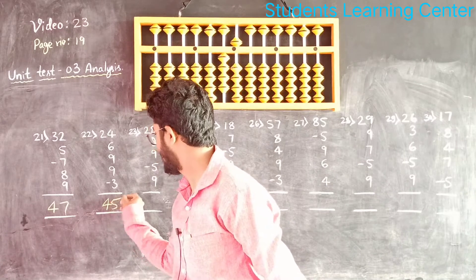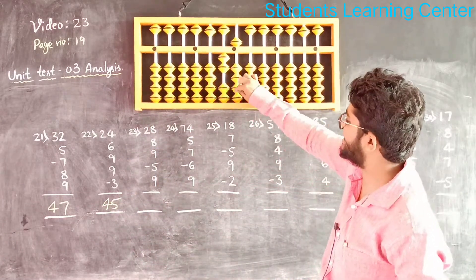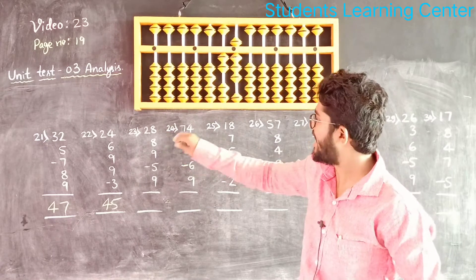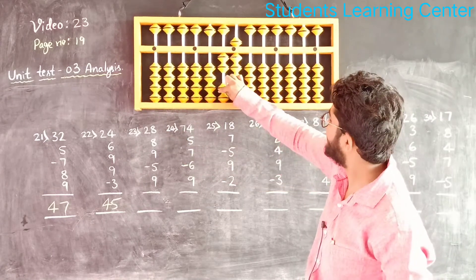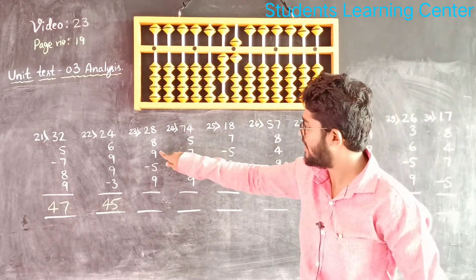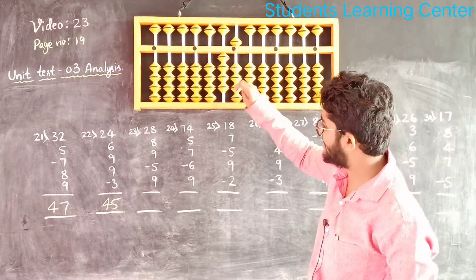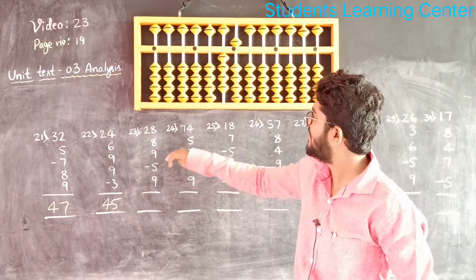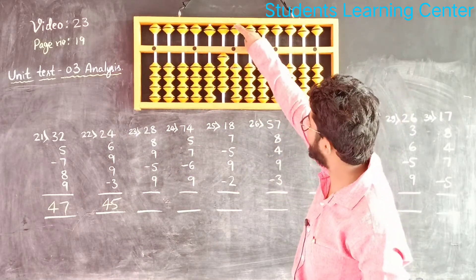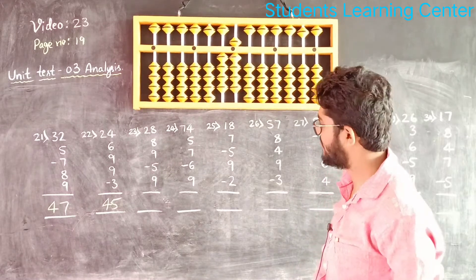Next question. Add 28, add 8, add 10 less 2, add 9, add 10 less 1, less 5, add 9. Answer is 49.